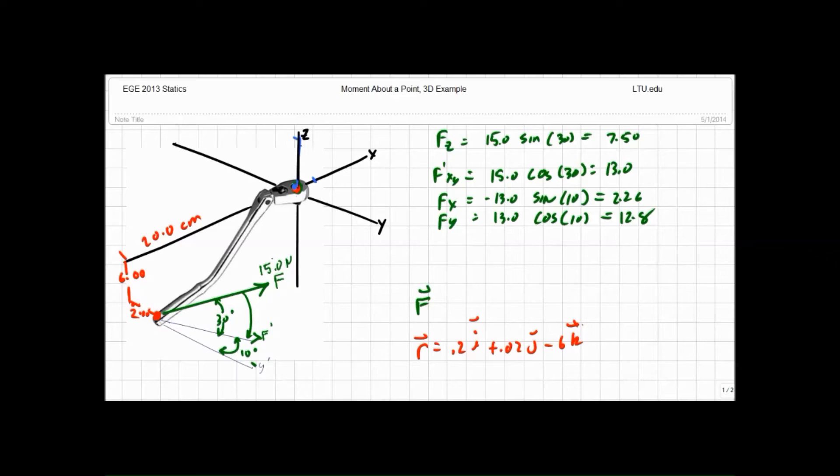and that gives me my final f vector in Cartesian form equals minus 2.26 i plus 12.8 j plus 7.50 k.